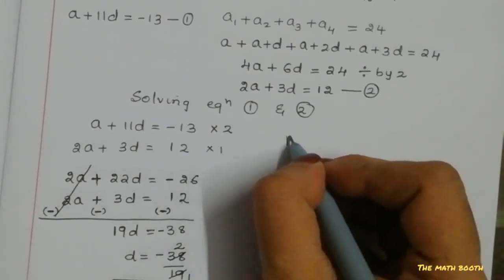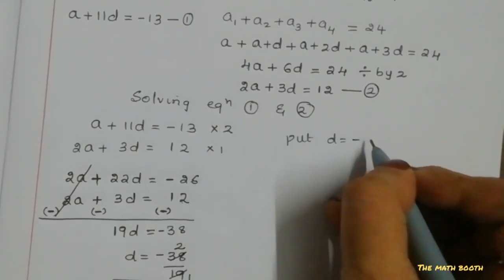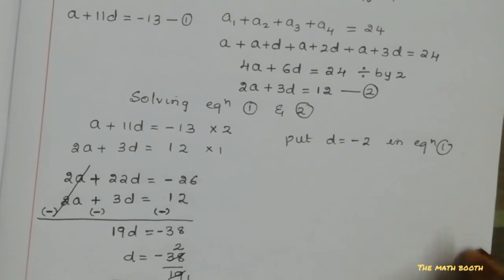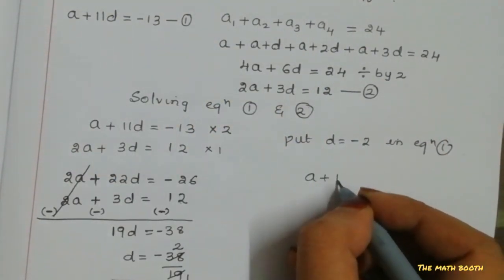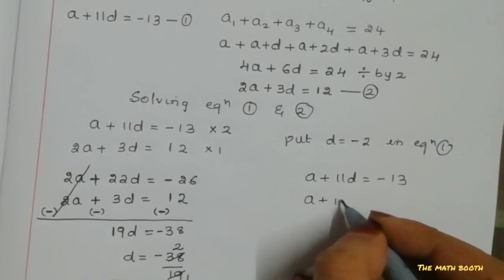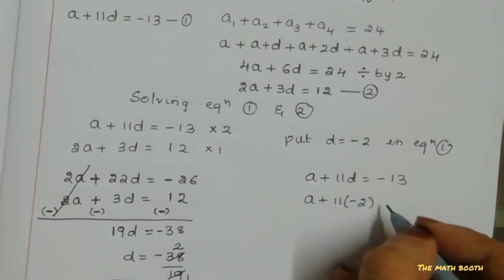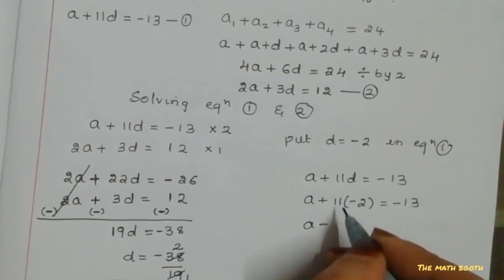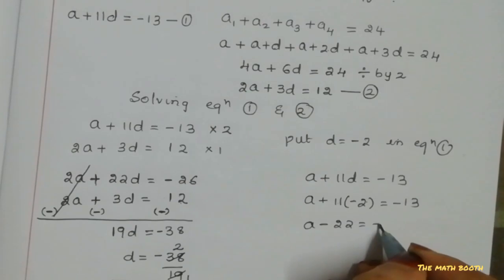So D value we got as -2. Now let us put D equals -2 in any equation. Let us take equation 1. In equation 1, I will write: a + 11D = -13. A value we don't know, 11 as it is, D value we got -2 equals -13. So a + 11 times -2 equals -13. A plus -22 equals -13. A equals, what we have here, -13 as it is minus -22.